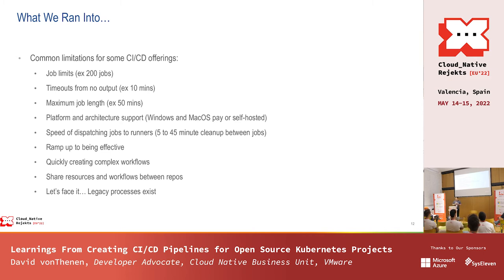Some CI systems had 200 concurrency limits, which sounds like a lot — 200 jobs at once would cover most people's situations. But in our case, every PR that was open and every commit we pushed triggered standing up an entire new environment and testing it all the way through. If you have someone pushing commits really fast and multiple people on the team doing it — 10, 20, 30 people — you can burn through those 200 concurrent limits really fast.